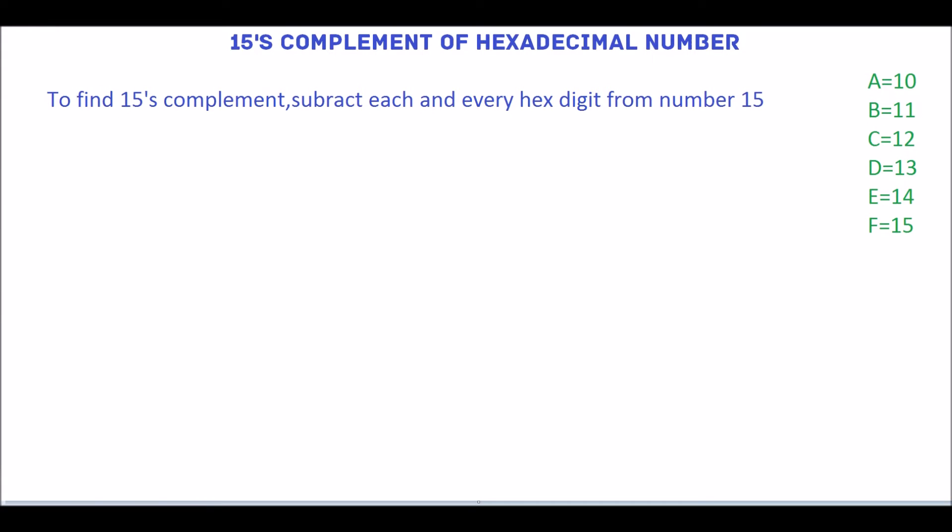In this tutorial, we will see 15's complement representation of hexadecimal number. To represent the hexadecimal number in 15's complement form, we have to subtract each and every hexadecimal digit from number 15. We will see few examples.